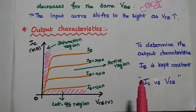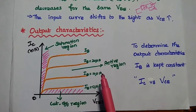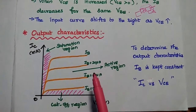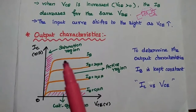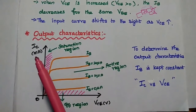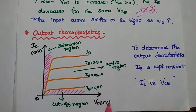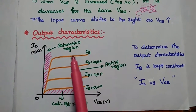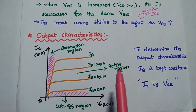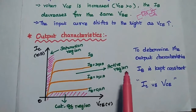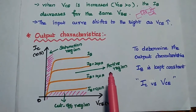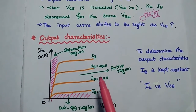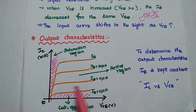Next is output characteristics. To determine the output characteristics, we keep input current IB constant by adjusting the input voltage. We analyze output current IC versus output voltage VCE. In the output characteristics, there are three regions: active region, cut-off region, and saturation region. In the active region, we get maximum current conduction — the base emitter junction is forward biased and the collector emitter junction is reverse biased. The transistor can amplify the signal in this region.